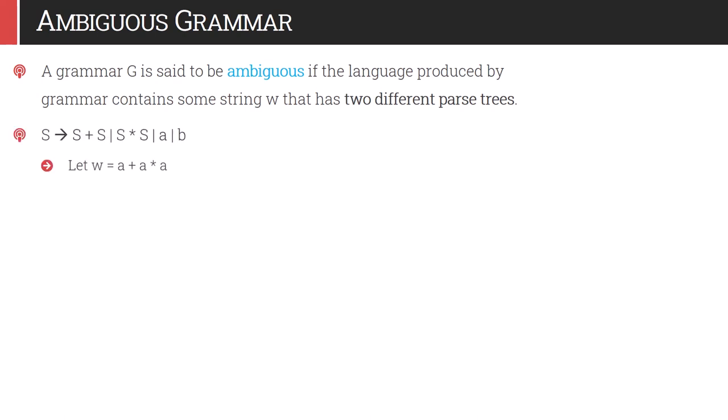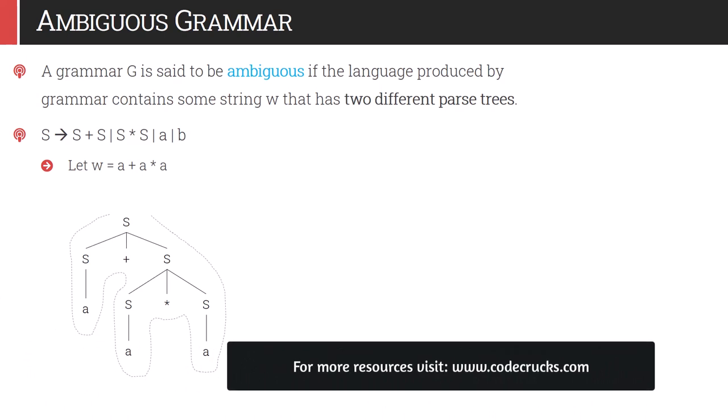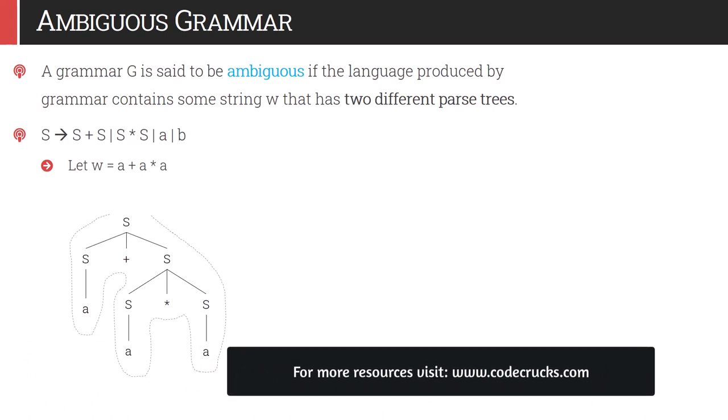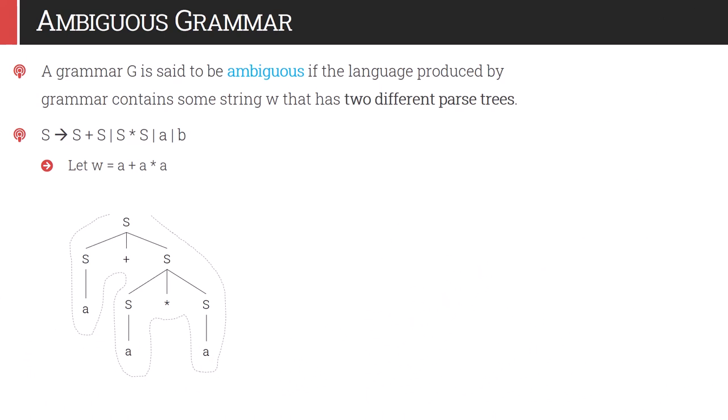Consider the grammar S gives S plus S, or S into S, or a, or b. Let the string W equal a plus a into a. This is one possible parse tree: S derives S plus S, then from the first S we replace it by small a, then the second S we replace by S into S, and both small S's we replace by small a, giving us the string a plus a star a when read in in-order traversal.